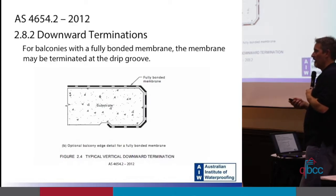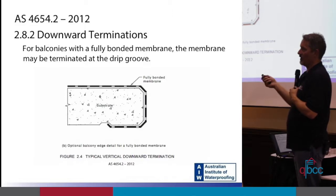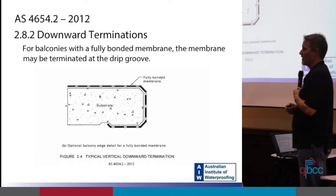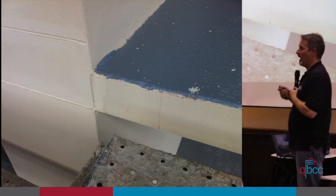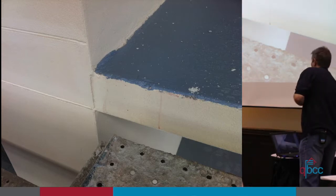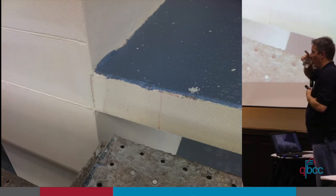That drainage angle is an alternative solution — so if you're going to reference AS 4654, anything that deviates from the standard detail is an alternative solution. Here's an example of how not to do that front termination: you can't just let the membrane swing in the middle of nowhere.